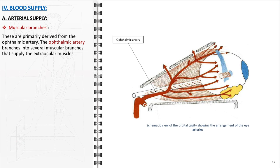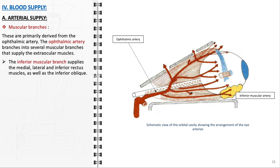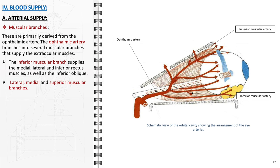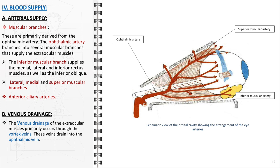The blood supply and venous drainage of the extraocular muscles are integral to their function and overall ocular health. The primary arterial supply is derived from the ophthalmic artery, a branch of the internal carotid artery, which branches into several muscular branches. Specifically, the inferior muscular branch supplies the medial, lateral, and inferior rectus muscles, as well as the inferior oblique muscle. Additional lateral, medial, and superior muscular branches cater to the corresponding rectus muscles. The anterior ciliary arteries, mainly arising from the muscular branches, are also significant, delivering blood to the anterior segment of the eye. Venous drainage is primarily facilitated by the vortex veins, which collect deoxygenated blood and channel it into the ophthalmic vein.